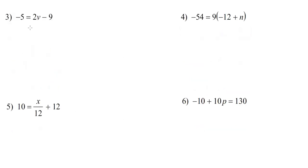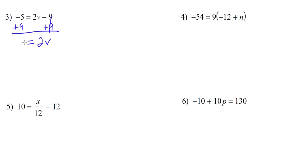Number 3: negative 5 equals 2v minus 9. Step 1, undo addition or subtraction. So we have to get rid of this negative 9 by adding 9 to both sides. On the right, the 9s cancel out, leaving us with 2v. And on the left, negative 5 plus 9 — different signs subtract, keep the sign of the bigger number — negative 5 plus 9 is going to be positive 4.